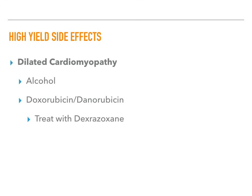For dilated cardiomyopathy, the two biggest causes are alcohol and doxorubicin/daunorubicin, which are chemotherapeutic drugs. For alcohol, get the patient off it. For doxorubicin-induced dilated cardiomyopathy, treat with dexrazoxane and stop the doxorubicin. This is high yield because a patient doing nothing wrong can suddenly go into heart failure and you need to figure out why.